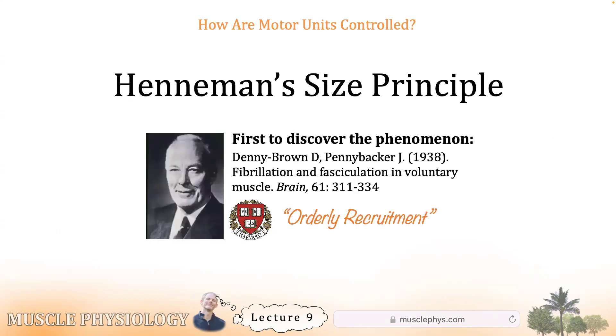Now it's called Henneman's size principle. But the first people to discover this relationship were not named Henneman. Neither of them had the last name Henneman. The first people to recognize it were Denny Brown and Penny Backer in 1938. They were working in a lab at Harvard. That picture there, that's Denny Brown, Derek Ernest Denny Brown.